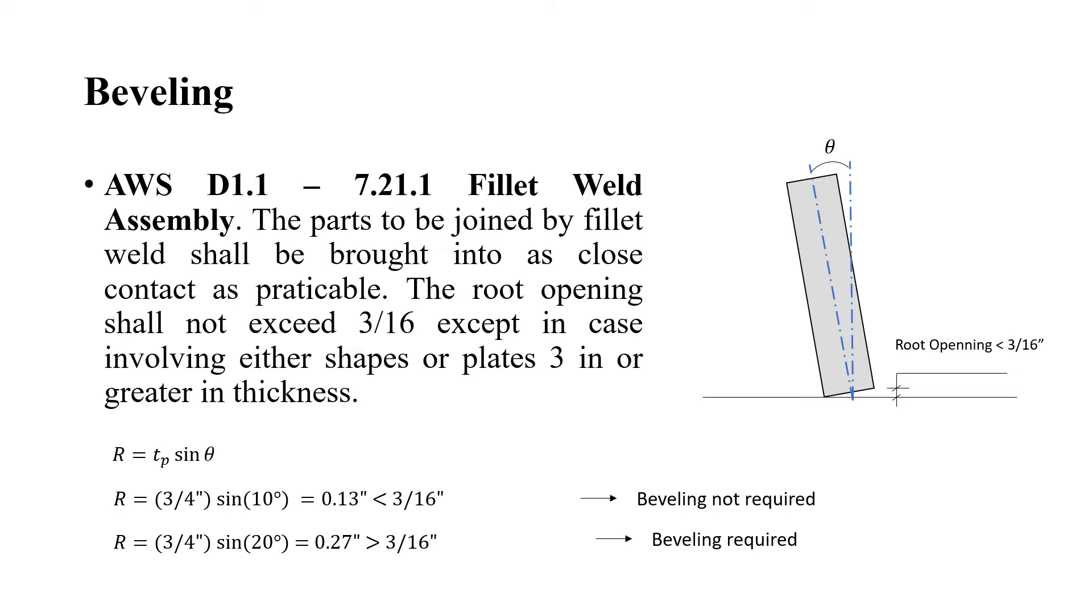First of all, I would like to discuss the root opening. According to the welding code AWS D1.1, the parts to be joined by fillet weld shall be brought as close as possible. However, it is allowed to leave a root opening, which is the distance between the two plates, of 3/16 inches, except in cases involving plates 3 inches or greater in thickness.